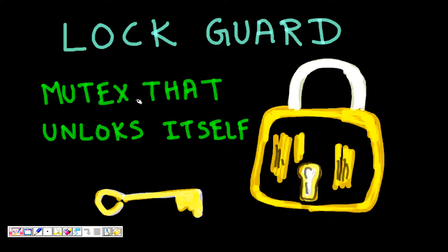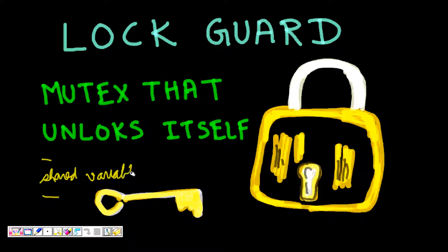Today we will look at a very interesting problem: lock guard. Usually we apply mutex in multithreading programs. We use mutex to lock a part of code so that no two threads can run it at the same time and corrupt some of the shared data. That's why we use mutex locks on a critical section which uses shared variables, and when we are coming out we unlock the mutex.